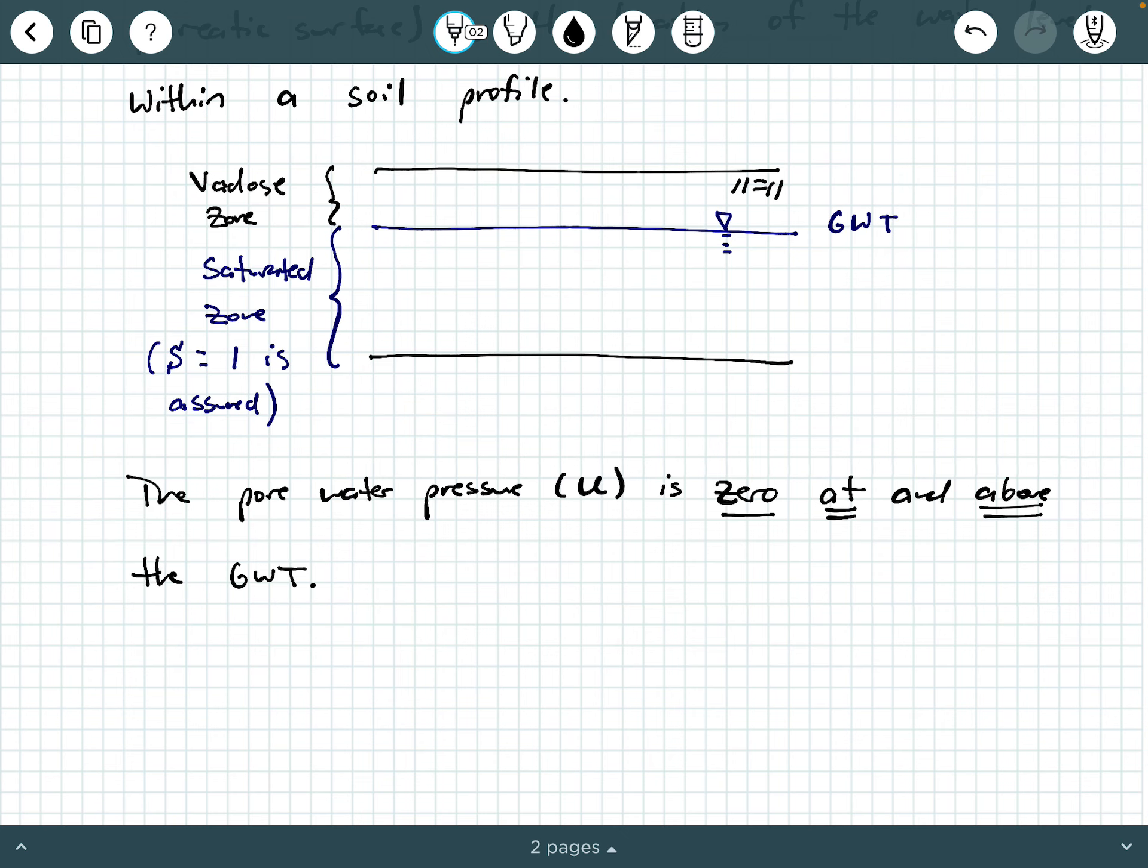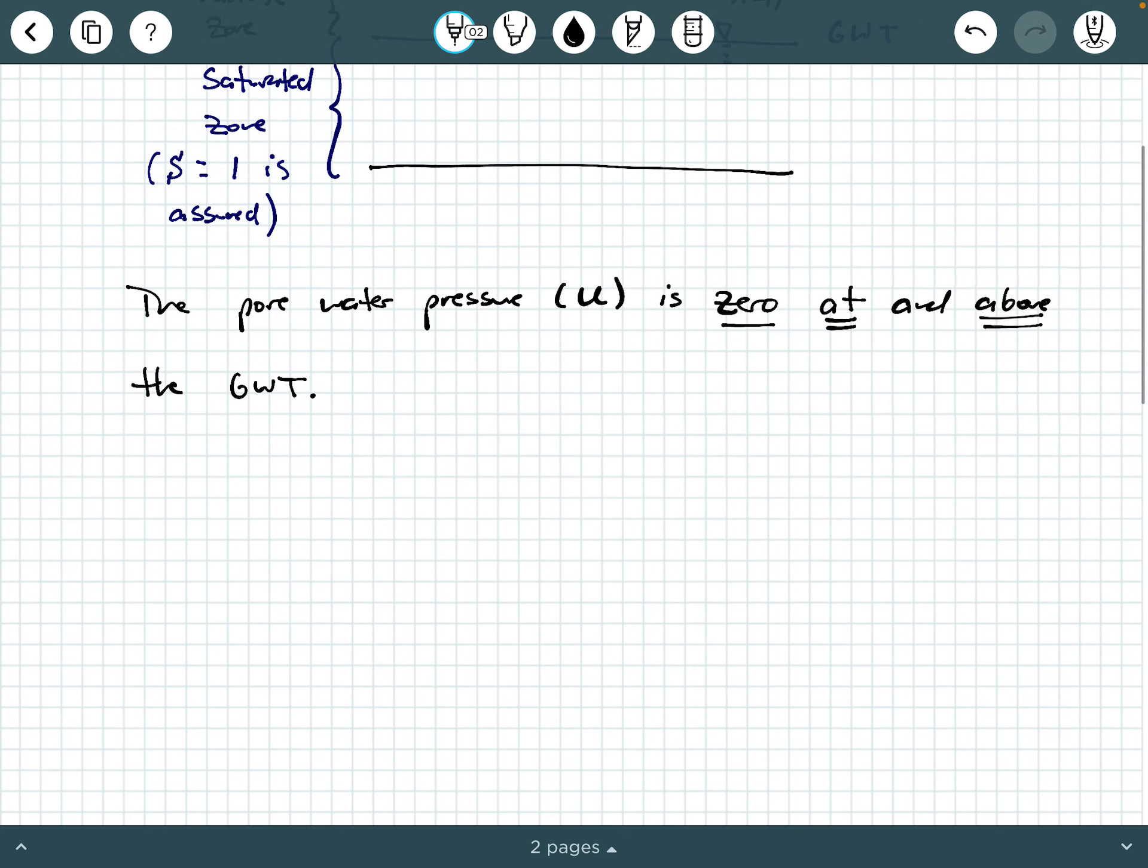Now, what about below the groundwater table? Below the groundwater table, the pore water pressure, which we call U, is computed as U equals H sub P times gamma water. And we should already know that, where H sub P is our pressure head.